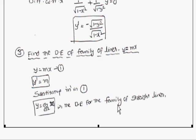To summarize the formation of differential equations: if one arbitrary constant is there, differentiate one time; if two, differentiate two times; if three, differentiate three times. Given a relation, eliminate the arbitrary constants and you will get a differential equation. That is the main concept behind the formation of differential equations. Thank you.